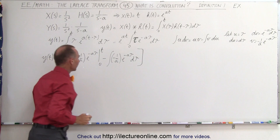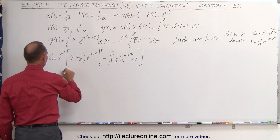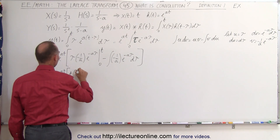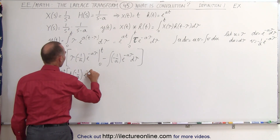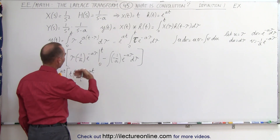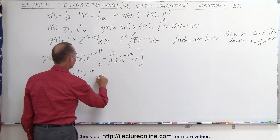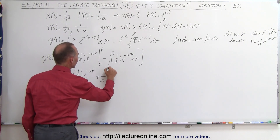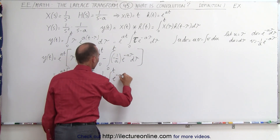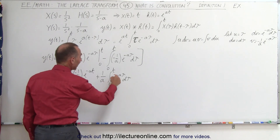Now simplifying by plugging in the limits: this is equal to e to the at times — plugging in the upper limit — t times minus 1 over a times e to the minus a t. When we plug in the lower limit, tau equals 0, and 0 times anything gives us 0, so we can ignore the lower limit. The minus times minus gives us a plus, and we pull out the 1 over a. We still have the integral from 0 to t of e to the minus a tau d tau, which is easy to integrate, giving us another minus 1 over a.